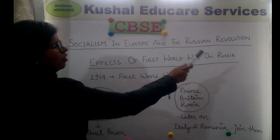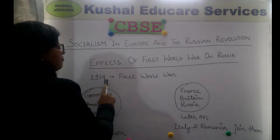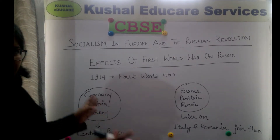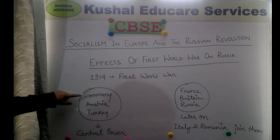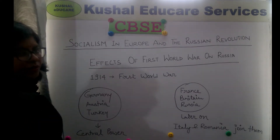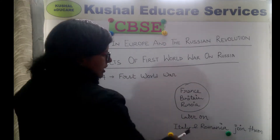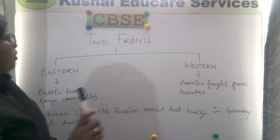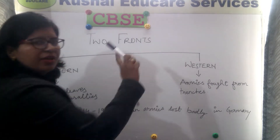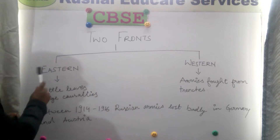Today I am taking the topic: the effect of the First World War on Russia. World War One broke out in 1914. There were two European alliances. The first was Germany, Austria, and Turkey, called the Central Powers. The second was France, Britain, and Russia — later Italy and Romania joined them. The war had two fronts: Eastern and Western.